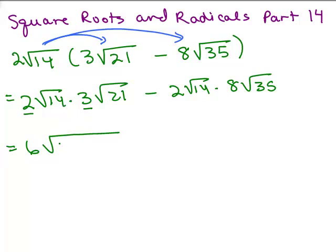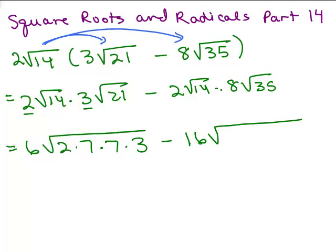7 goes into both of those. So I'm going to write 14 as 2 times 7, and then 21 as 7 times 3 — so I'm just writing 14 times 21 in factored form. This happens to be prime factorization. 2 times 8 is 16, and same thing here — do you see a common factor between 14 and 35? It also happens to be 7, so 14 is 2 times 7 and 35 is 7 times 5.